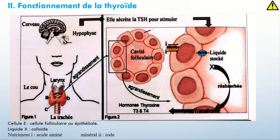Qu'est-ce qui se passe ? Les cellules folliculaires vont absorber du sang, vont puiser dans le sang les acides aminés et l'iode. Pourquoi faire ? Vous savez bien que ces deux substances vont servir à la fabrication, à la synthèse des hormones thyroïdiennes.